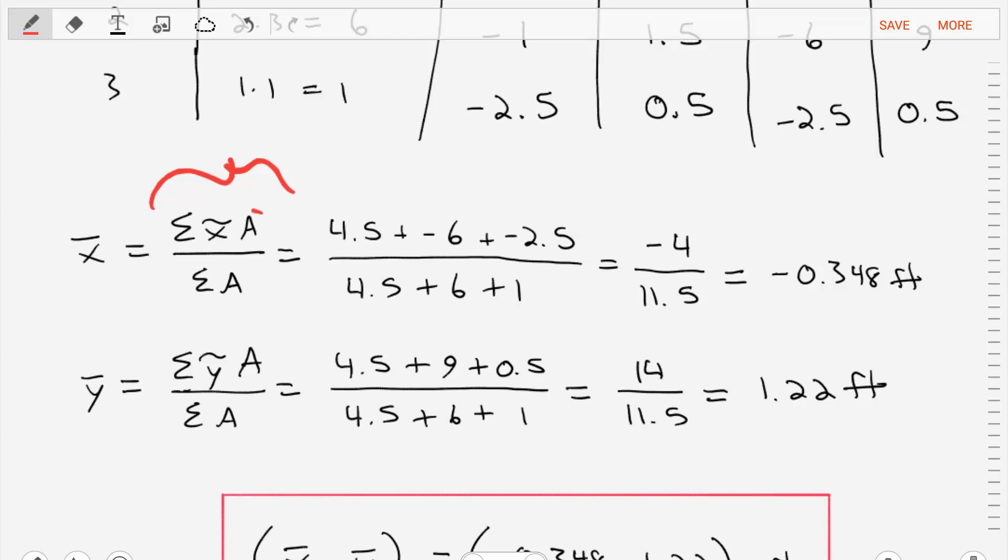So those expressions that we found and the areas that we found, we can apply those directly in for element 1, 2, and 3. Add those together. And we find that x bar is at negative 0.348 feet.